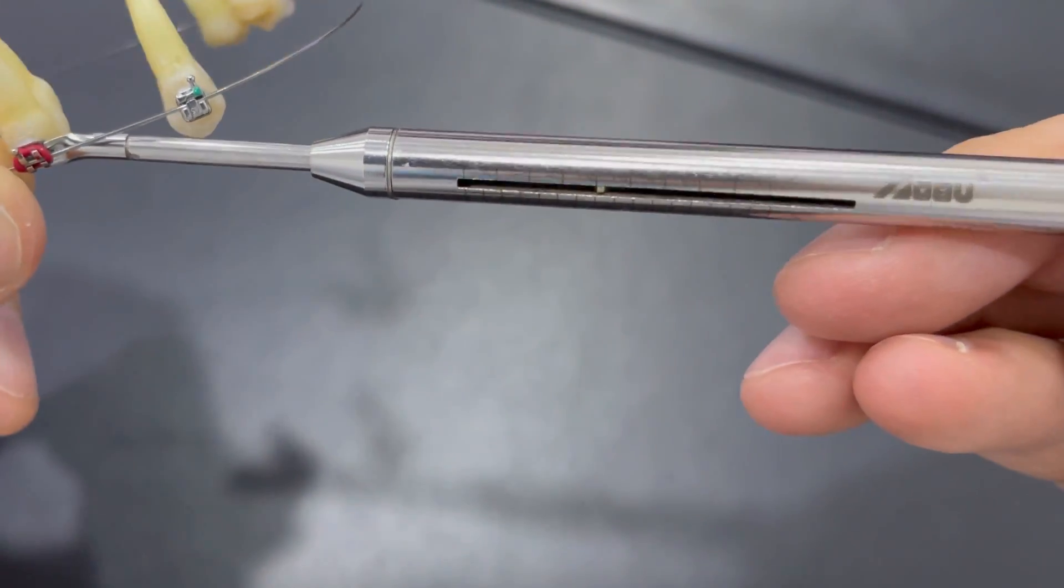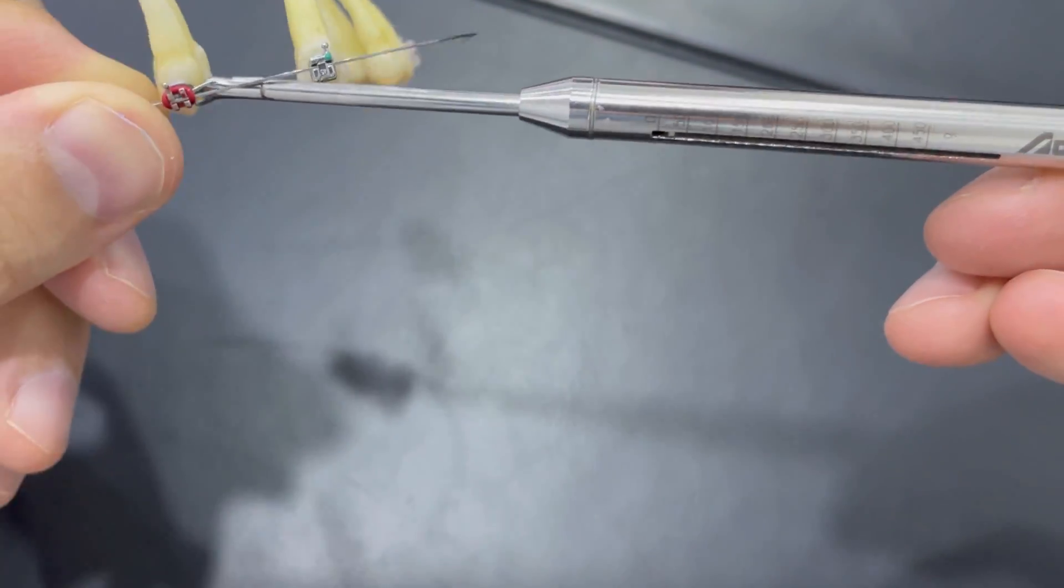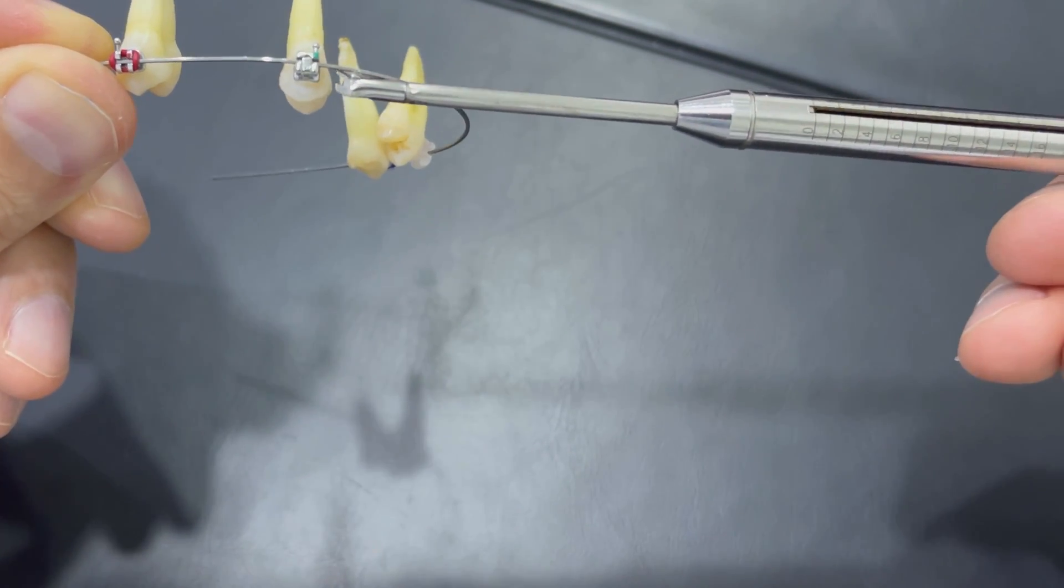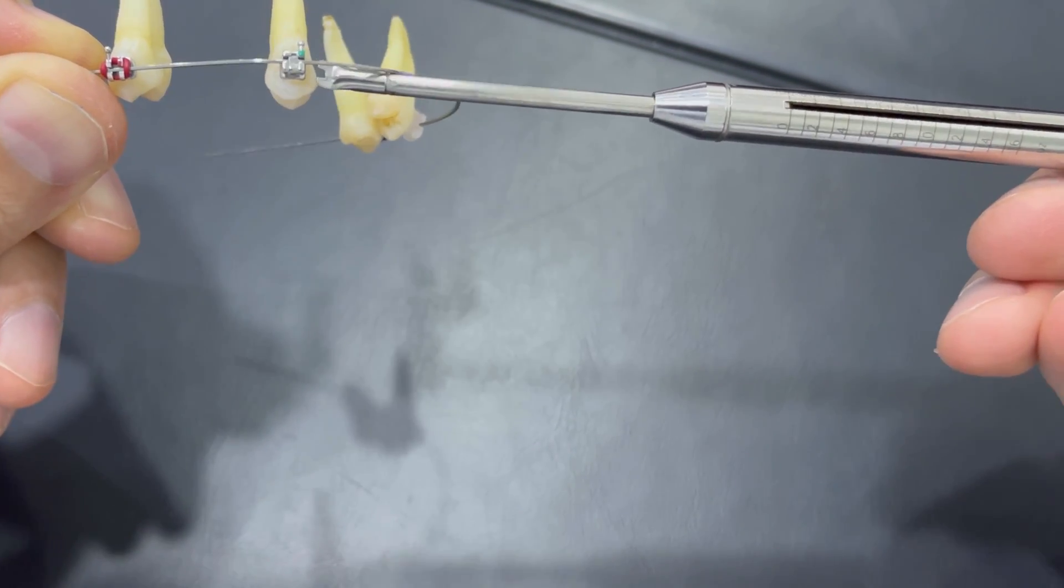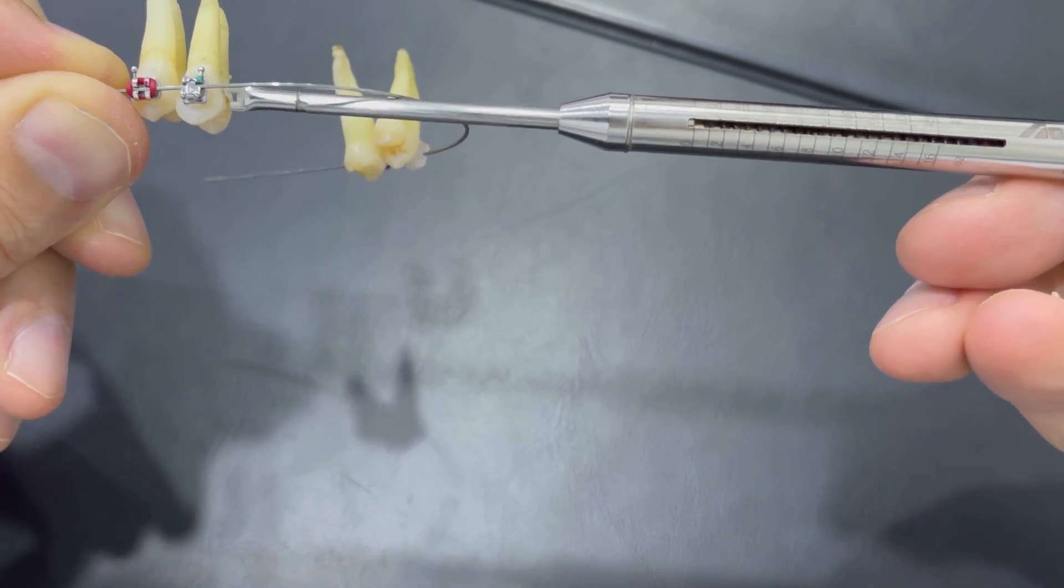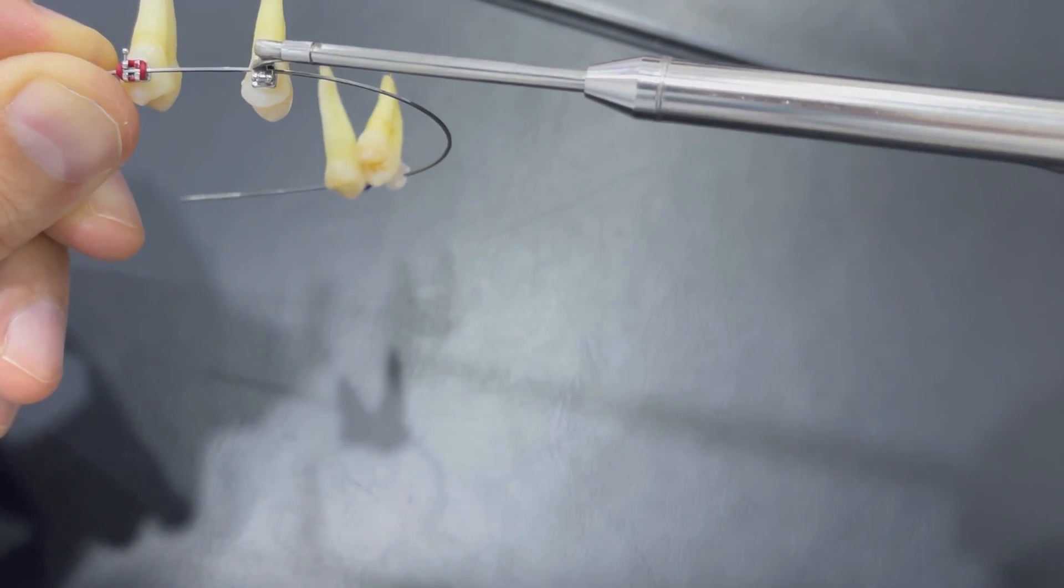300 grams to move the normal ligating braces with the rubber band, while the self-ligating braces require almost 5 to 10 grams.